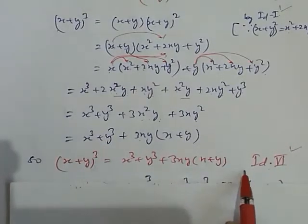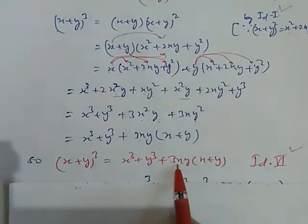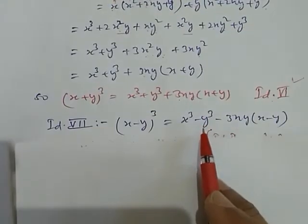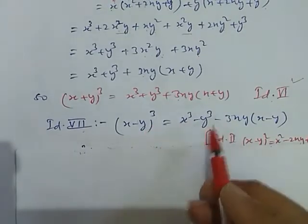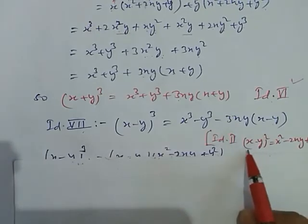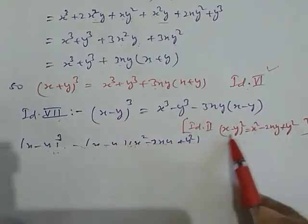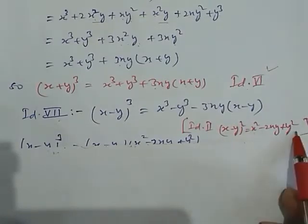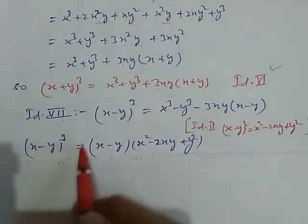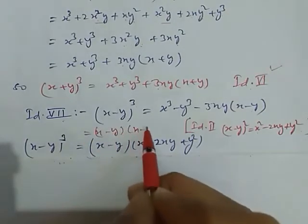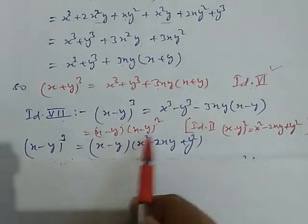Now, the identity 7: x minus y whole cube. This can be written as x minus y, three times. This is our identity. So, first we take the help of x minus y whole square, which can be written as x squared minus twice xy plus y squared. This is identity second. So, we take help by this identity. Because this can be written as x minus y into x minus y whole square — because we have 3 power, here 2 and here 1, so 2 plus 1 equals 3. So, x minus y whole cube can be written as this.